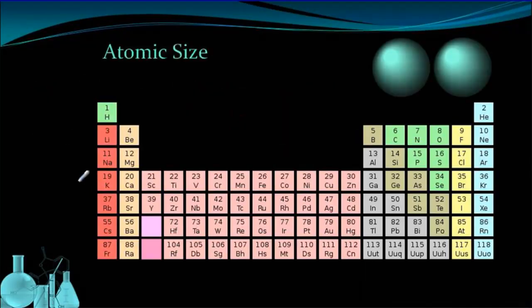So our first trend is atomic size. Atomic size is actually measured by something called atomic radius. And to figure out what the atomic radius is, we basically look at an element, so an atom in an element, and I've got two over here, representative spheres for my atoms.